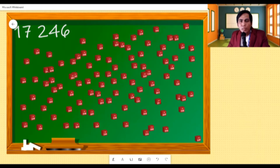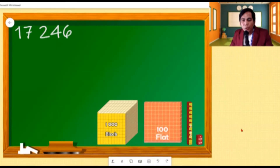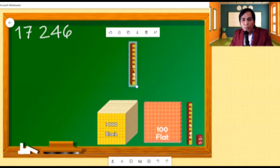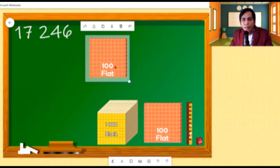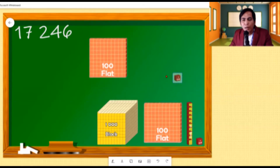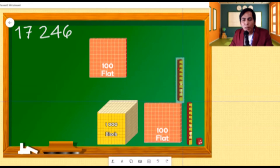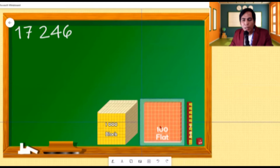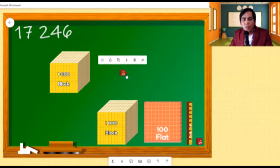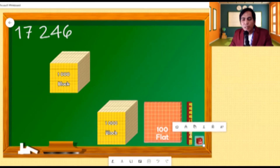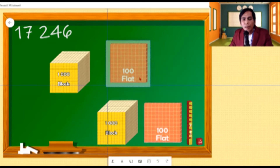What we can do now is to use longs, flats, and blocks. A unit represents one individual. A long is equivalent to 10 units, so there are 10 units in one long. The flat has 100 units, so 100 units is equivalent to one flat, and one flat is equivalent to 10 longs. One block is equivalent to 1,000 units, and one block is also equivalent to 100 longs and 10 flats.